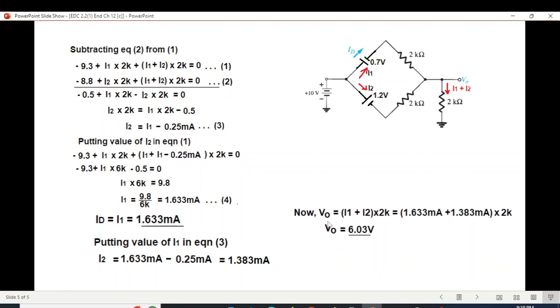And now V0 is I1 plus I2 into 2k. Putting in the value of I1 and I2 multiply by 2k, the answer is 6.03 volt. So this is the final answer.